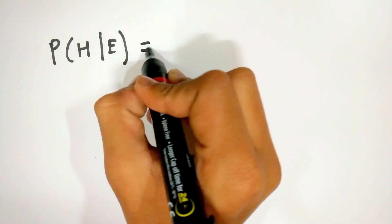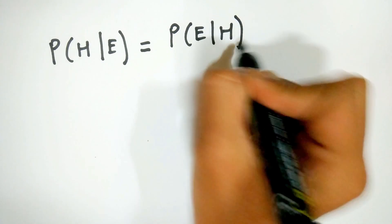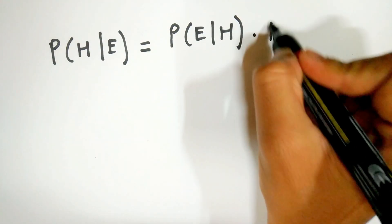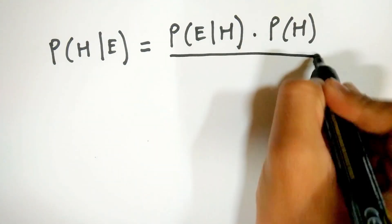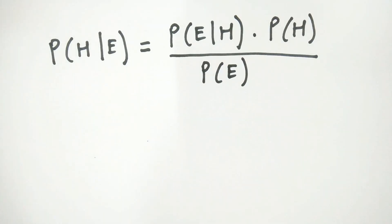It is mathematically given by the probability of a hypothesis H being true given a certain evidence E. That is probability of H given E is equal to the conditional probability of E given H times the probability of H divided by the probability of the evidence actually occurring, that is probability of E.